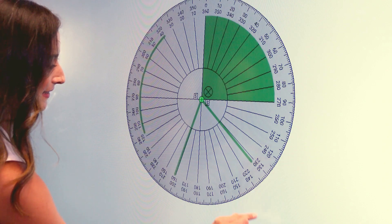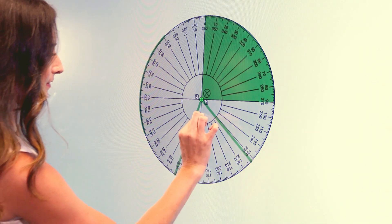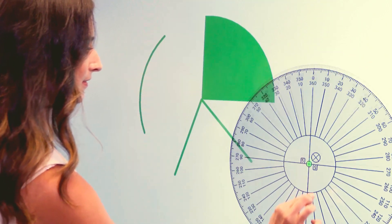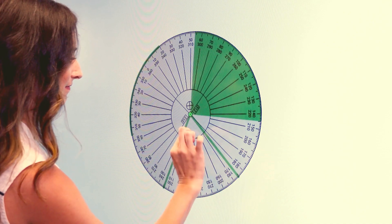To resize the protractor, tap near the numbers and drag it in and out. Tap and drag in a blank area to move it around the canvas. To rotate, drag it around the middle where the lines are.